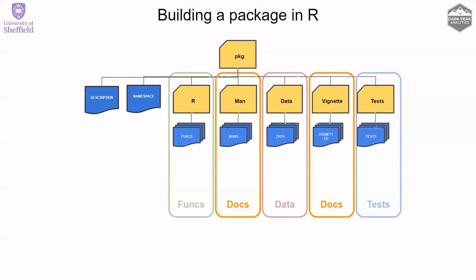By this point you essentially have a package already — you're so close to a package that you may as well just structure it as one. In a package structure you have a top-level folder, a DESCRIPTION file, a NAMESPACE file, an R folder containing all your functions, a man folder (essentially a manual folder) containing documentation for each function, a data folder containing raw data and default values, a vignette folder for higher-level model documentation, and a test folder containing tests.